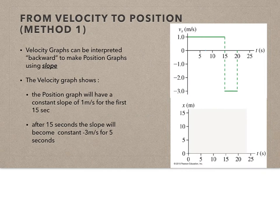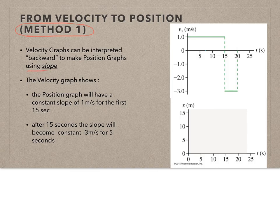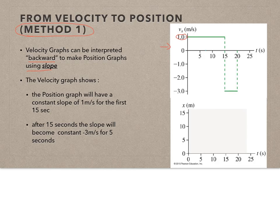Now that we know how to go from position versus time to velocity versus time, we can practice going backwards — how do we go from velocity versus time to position versus time? There are two methods. Method 1 is to look and predict the slope — backward sloping. What the velocity versus time tells me is that the position versus time down at the bottom will have a positive 1 meter per second slope, because the slope of position versus time is velocity.